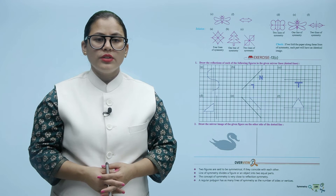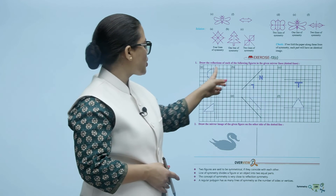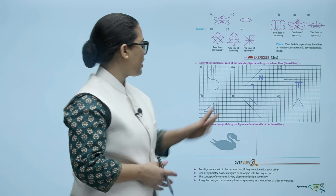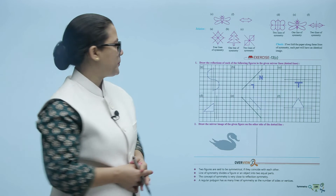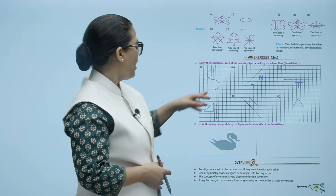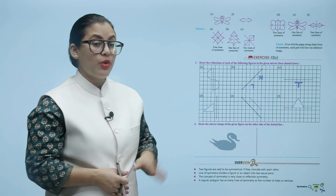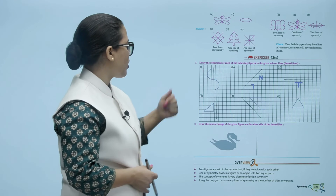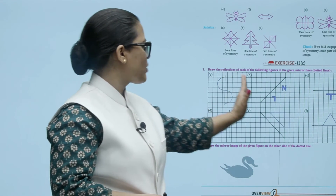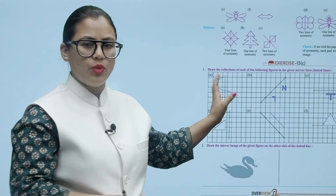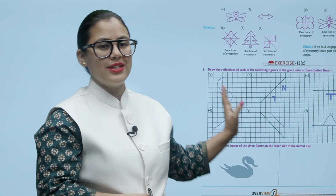Let's see the exercise: Draw the reflection of each of the following figures in the given mirror lines shown by the dotted lines. The dotted line is your mirror line; you have to draw the reflection on the other side. You can see it like this — it is very easy and you can do it easily.